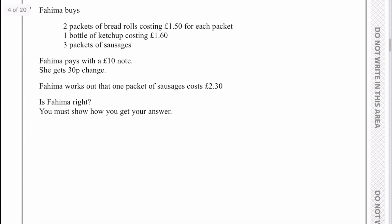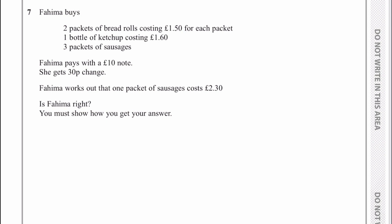Let's move on then to number 7. Fahima buys some bread rolls, ketchup, and sausages. She works out that one packet of sausages costs £2.30 — is she right? Let's have a look at what she actually spends. Two packets of bread rolls costing £1.50 each is going to be £3. Then a bottle of ketchup costing £1.60. So in total she's actually spent £4.60.